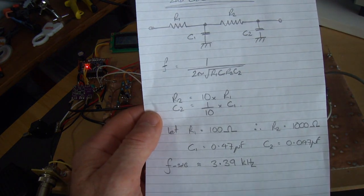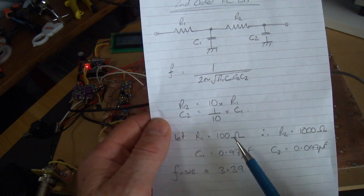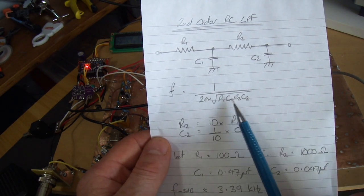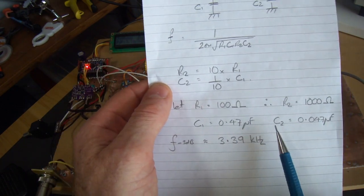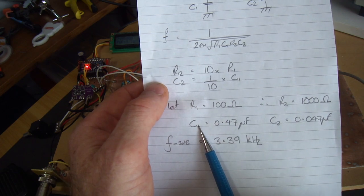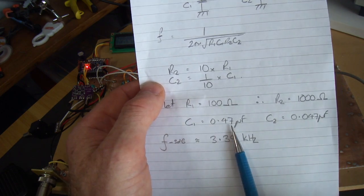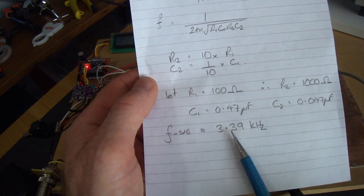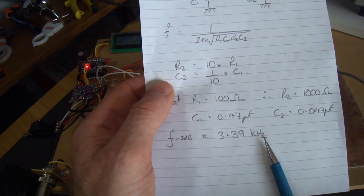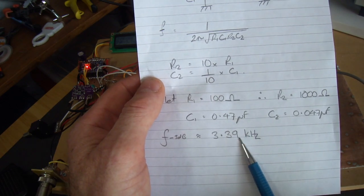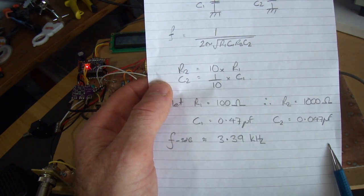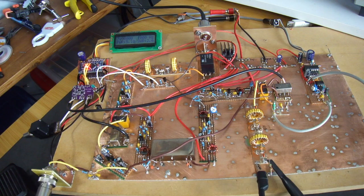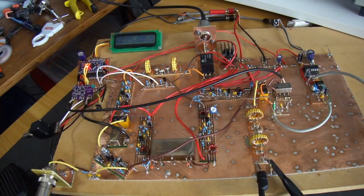I've used an online second order calculator just for convenience to plug in values. Using that calculator, I finalized things with a C1 of 0.47 microfarads, therefore C2 is a tenth of that, 0.047 microfarads, which gives me 3.39 kHz. So my minus 3dB point is at roughly 3.39 kHz, which is fine given that I'm not going to go beyond 2.4 anyway because of the crystal filter.